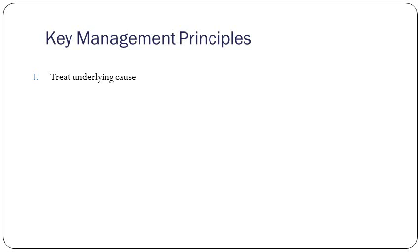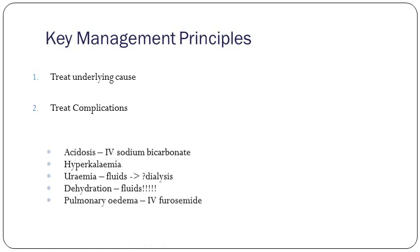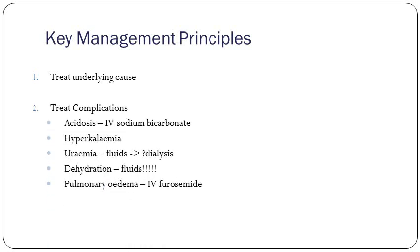Key management principles in any patient with deranged U&Es: treat the underlying cause. Treat the complications — treat acidosis if severe with IV sodium bicarbonate. If hyperkalemic, we'll go through that. If uremia is really high and not responding to fluids, get the renal team involved for dialysis. If dehydrated, give fluids after ensuring the bladder isn't distended. If there are signs of fluid overload such as pulmonary edema, start IV furosemide — but be cautious, as in really severe renal failure it can make things worse.